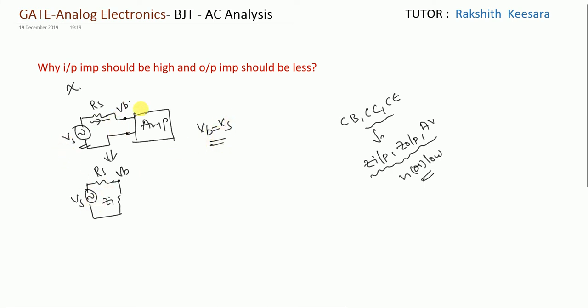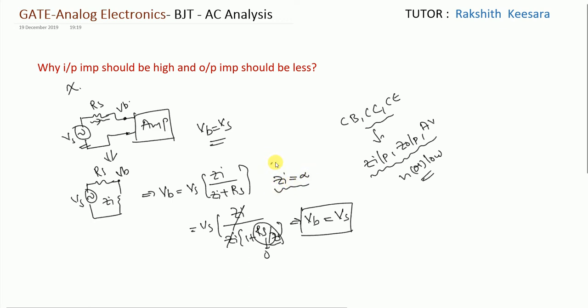We need Vs to be amplified, not Vb. From this, I can write Vb equal to Vs. If you observe, if I take Zi equal to infinity, it will be Zi by Zi. This both will get cancelled. Since Zi equal to infinity, this will become zero. So our Vb will become equal to Vs. The condition is Zi is infinity. This is ideal case. In practical case, Zi should be very high. So if Zi is very high, the loss across Rs is minimized. That's why our input impedance should be very high.